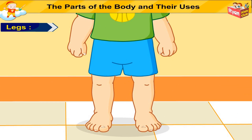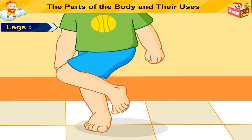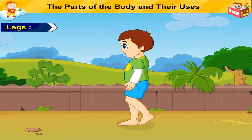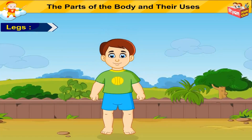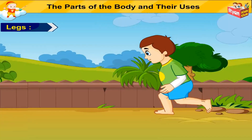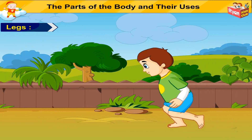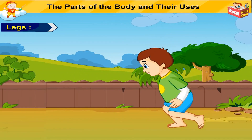Our legs bend at the knees and ankles. Toes of the feet can bend too. That is why we are able to move about freely. We can walk, jump, run, and hop with our legs. Isn't that a lot of fun?